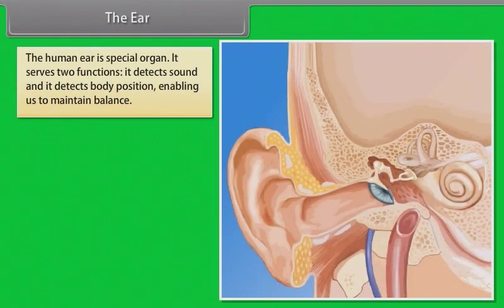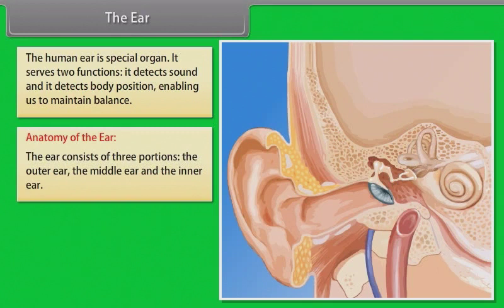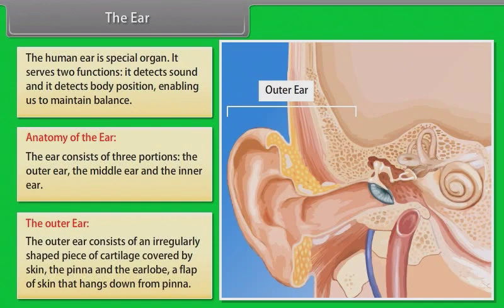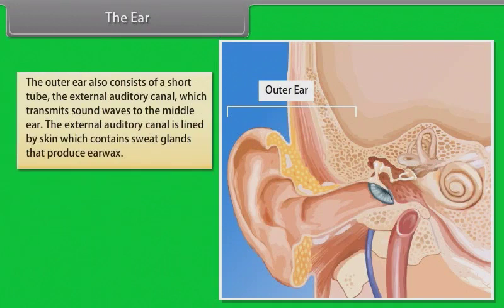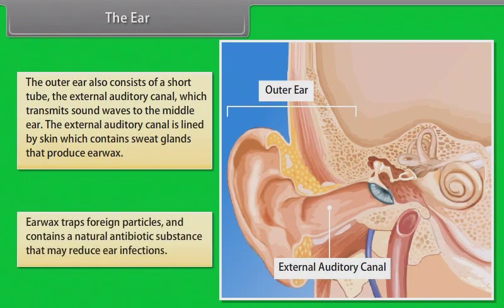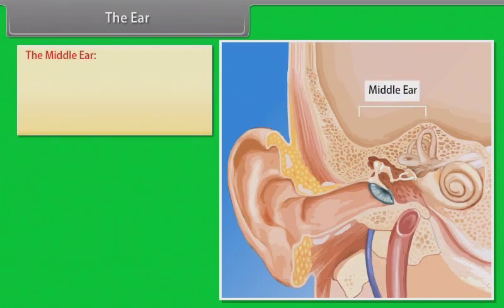The human ear serves two functions: it detects sound and detects body position, enabling us to maintain balance. The ear consists of three portions: the outer ear, the middle ear, and the inner ear. The outer ear consists of an irregularly shaped piece of cartilage covered by skin, called the pinna, and the ear lobe. It also includes the external auditory canal, which transmits sound waves to the middle ear and contains sweat glands that produce ear wax.